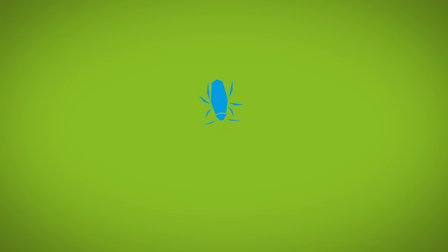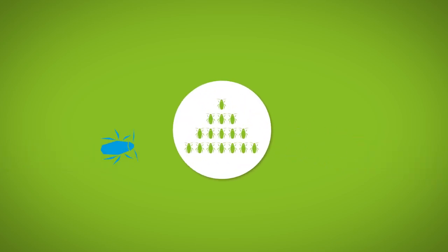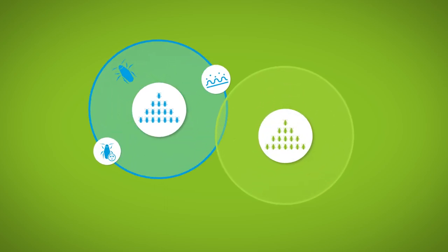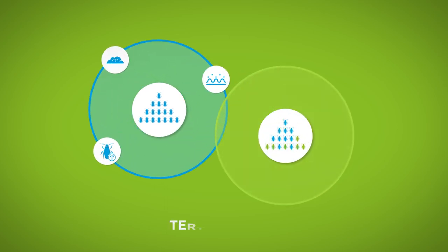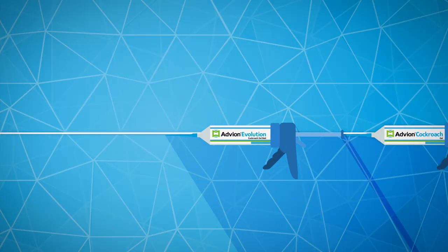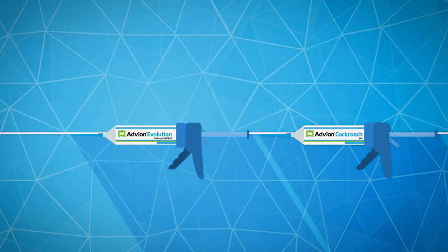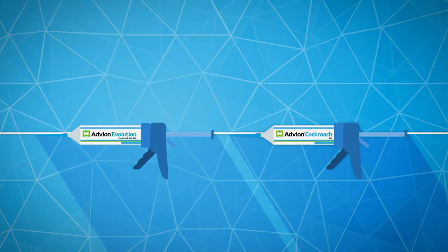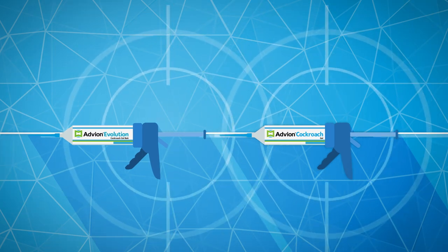Because of the behavior patterns of cockroaches, Advion evolution cockroach gel baits can be further transferred to a third group of cockroaches by the same mechanism described earlier, which is called tertiary kill. Only Advion brand cockroach gel baits have demonstrated this effect, leading to more thorough control.